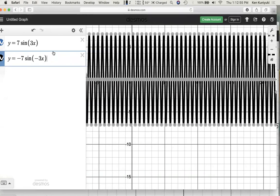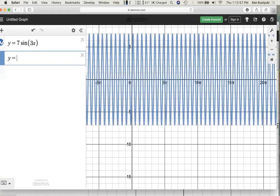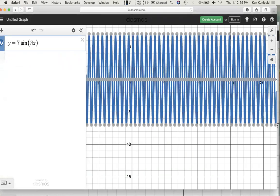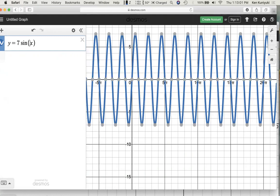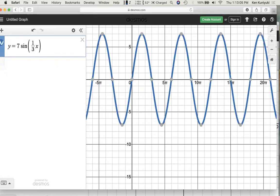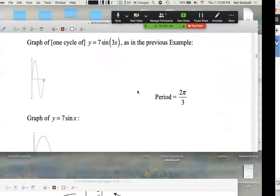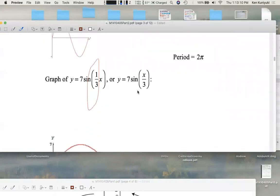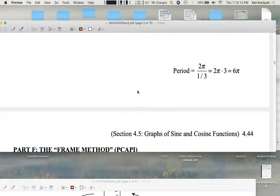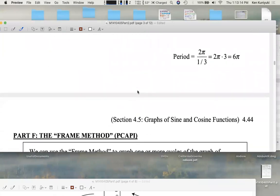So again, going from y equals 7 sine of 3x, y equals 7 sine of x, not as hyper, y equals 7 sine of 1 third x, more spread out. Next up, we're going to frame one cycle and be detailed with the key points and coordinates and then translations. Next time.